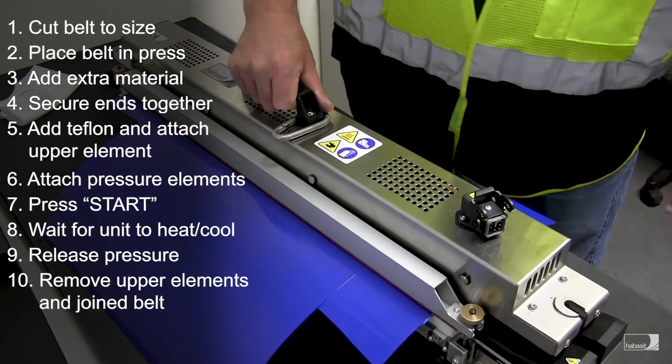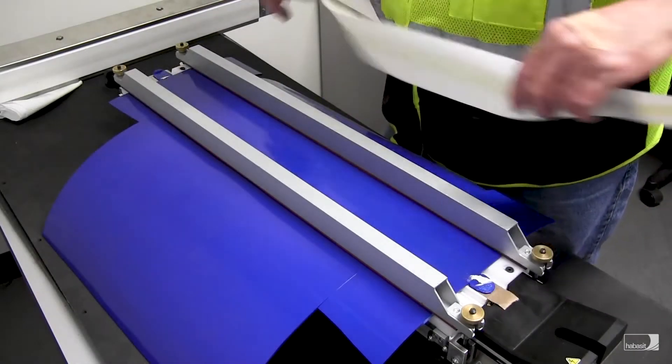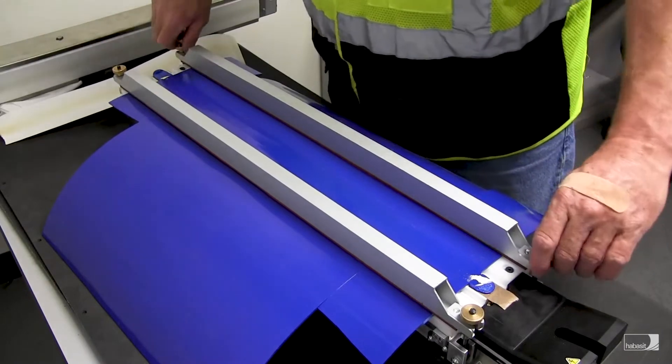Loosen and slide the press lock knobs out of its current position. Remove the paper from the top of the belt. Loosen and remove the hold down clamps.